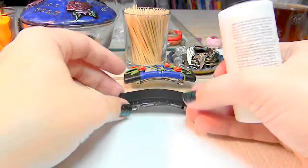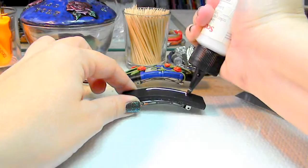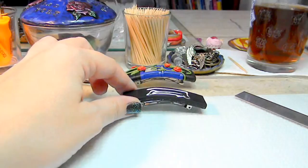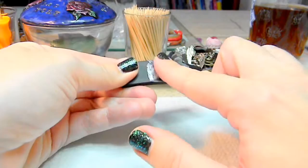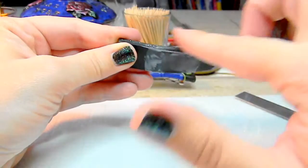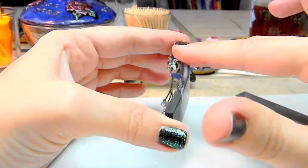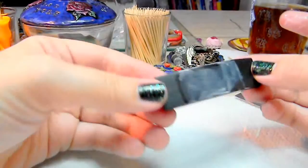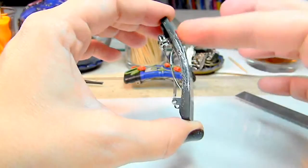You're going to lay down some of your Bake and Bond right here in the middle, and you're just going to push it around with your finger. You can use a toothpick if you'd rather. It doesn't bother me getting my hands dirty. Don't forget to do the edges here.